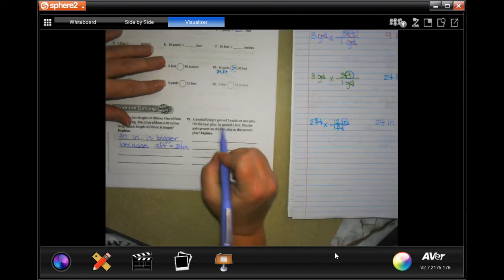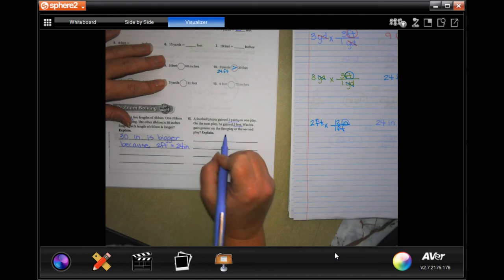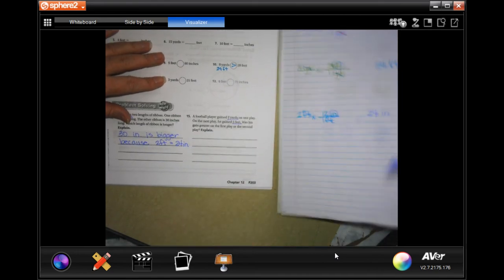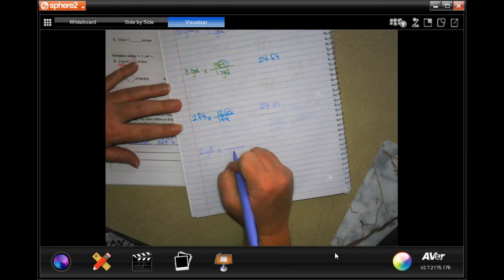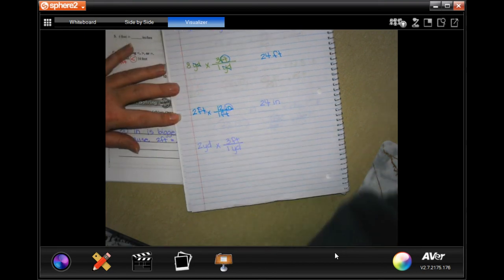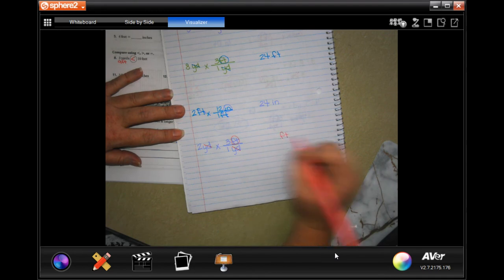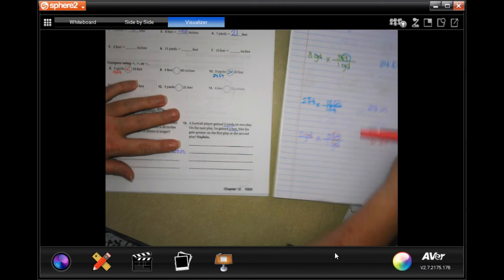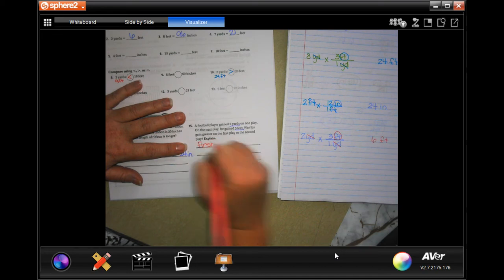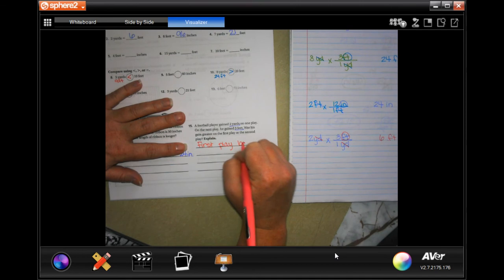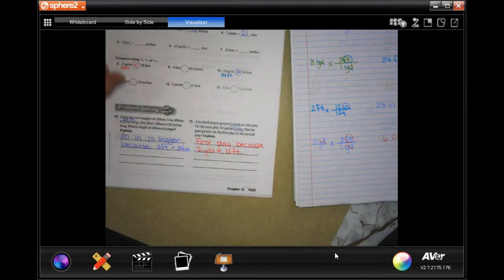A football player gained 2 yards in 1 play. On the next, he gained 5 feet. What was his gain? Greater on the 1st play or the 2nd? So we're going to turn yards into feet. So 2 yards. Where in 1 yard, there's 3 feet. So cross-cancel my yards. I'm left with feet. That's what I want. 2 times 3 is 6. So on the 1st play, because 2 yards equals 6 feet.